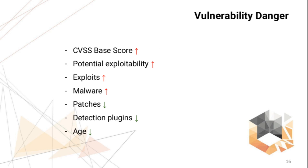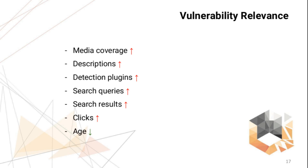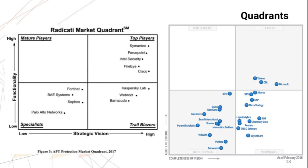Danger is about technical criticality and exploitability — it shows how interesting this vulnerability may be for an attacker. Relevance shows the attention paid to this vulnerability by media, vulnerability management vendors, and users of vulnerability databases. To show the current state of a vulnerability I use quadrants, like consulting and research companies do for comparing software vendors. So for products, ability to execute and completeness of vision are important; for vulnerabilities it will be danger and relevance.